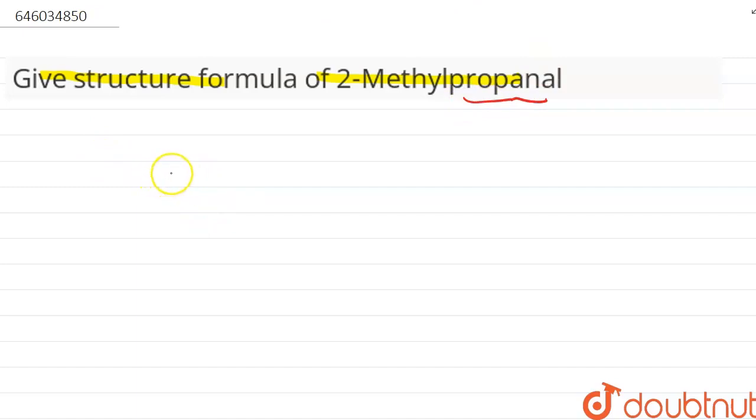That is, here we have one, two, and three. Here we have given propanal. And we know that we use 'al' as a suffix for the aldehyde group. That is, here we have an aldehyde group in this compound.